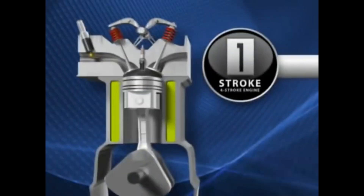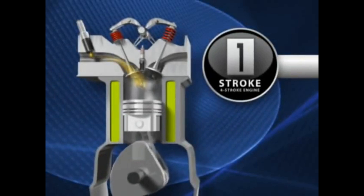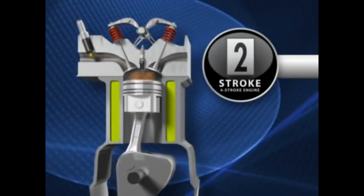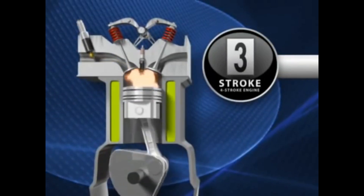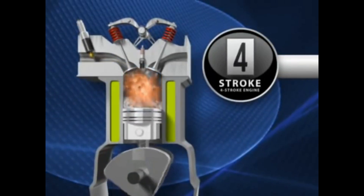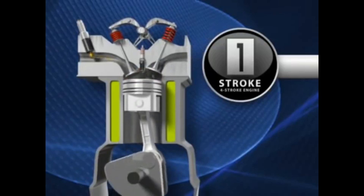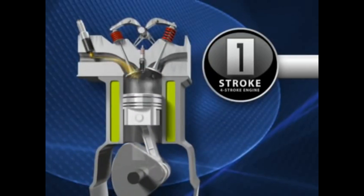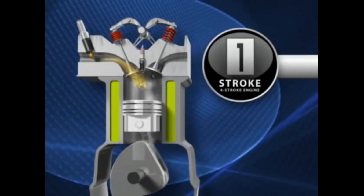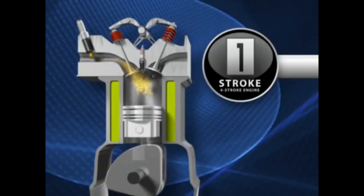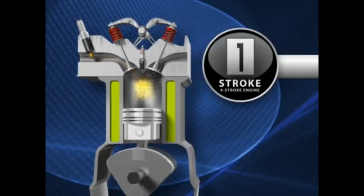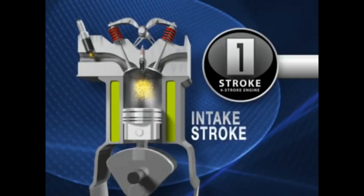A four-stroke engine is called a four-stroke because four up and down motions are needed to complete the cycle. In the first stroke, the piston travels downward as the intake valve opens and a mixture of air from the atmosphere and a metered amount of gas from the electronic fuel injector enter the cylinder. This is called the intake stroke.